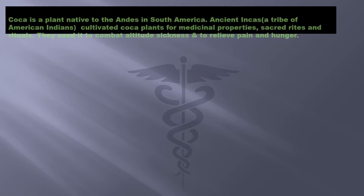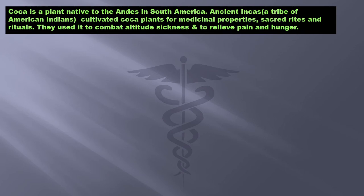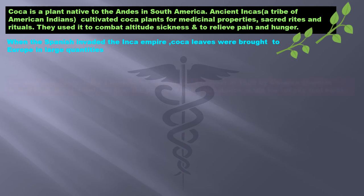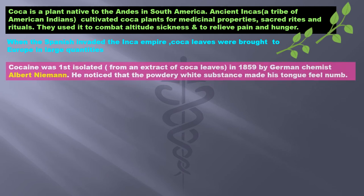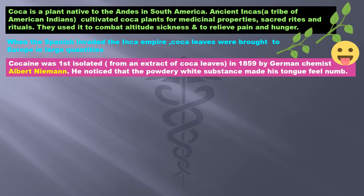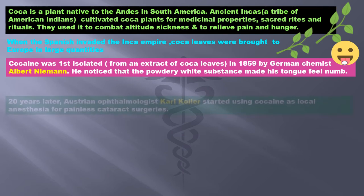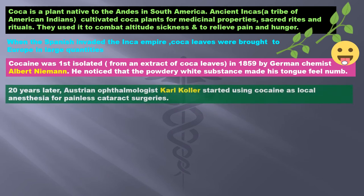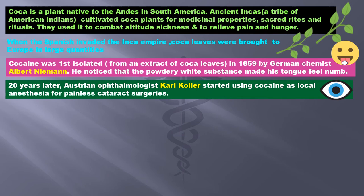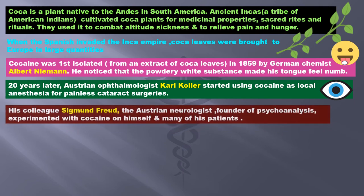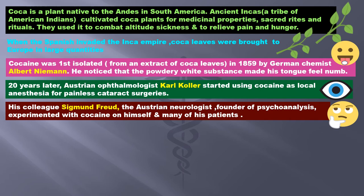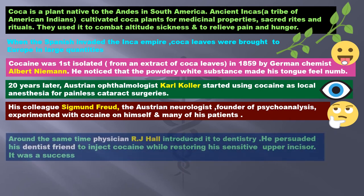Coca is a plant native to the Andes and South America. Ancient Incas cultivated coca for medicinal properties, sacred rites, and rituals — using it to combat altitude sickness and to relieve pain and hunger. When the Spanish invaded the Inca empire, coca leaves were brought to Europe in large quantities. Cocaine was first isolated from an extract of coca leaves in 1859 by German chemist Albert Niemann, who noticed the powdery white substance made his tongue feel numb. Twenty years later, Austrian ophthalmologist Karl Kohler started using cocaine as local anesthesia for painless cataract surgeries, and his colleague Sigmund Freud — Austrian neurologist and founder of psychoanalysis — experimented with cocaine on himself and many patients.